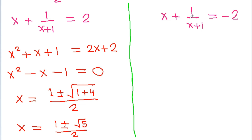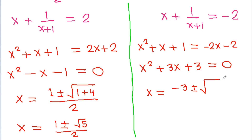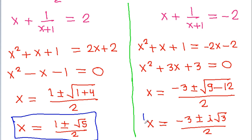From the second case we get x squared plus x plus 1 is equal to minus 2x minus 2, or x squared plus 3x plus 3 is equal to 0. Using the quadratic formula that gives discriminant 12 by 2a where a is 2, so we get x is equal to minus 3 plus or minus i root 3 by 2. So these are the four values of x — two real values and two complex values.